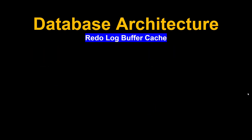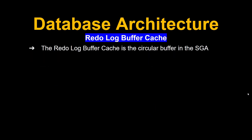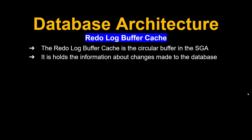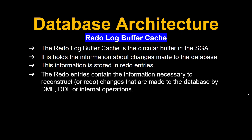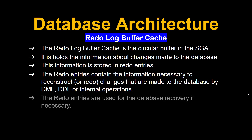Next is the Redo Log Buffer Cache. The Redo Log Buffer Cache is a circular buffer in the SGA. It holds information about changes made to the database. This information is stored in redo entries, which contain the information necessary to reconstruct changes made to the database by DML, DDL, or internal operations. Redo entries are also used for database recovery if necessary.